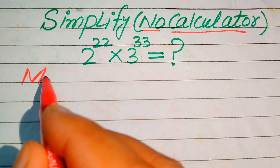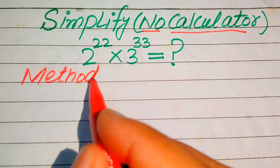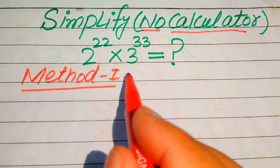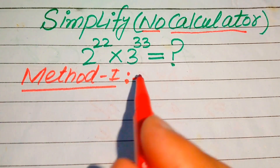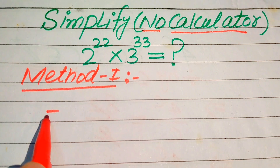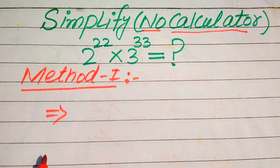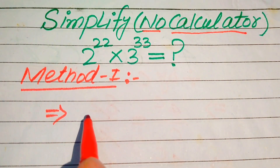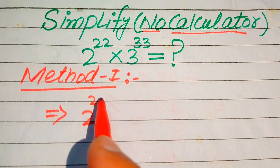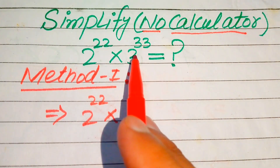First, we move towards our first method. In the first method we need to focus on the exponents of these two terms. It is written as 2 to the power of 22 multiplied by 3 to the power of 33.